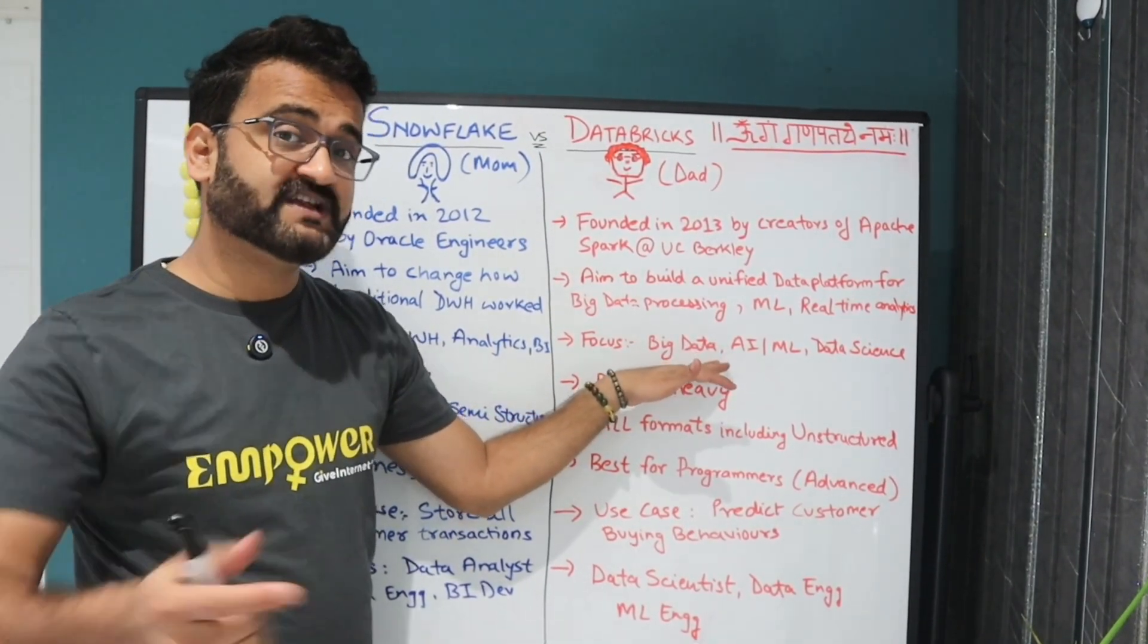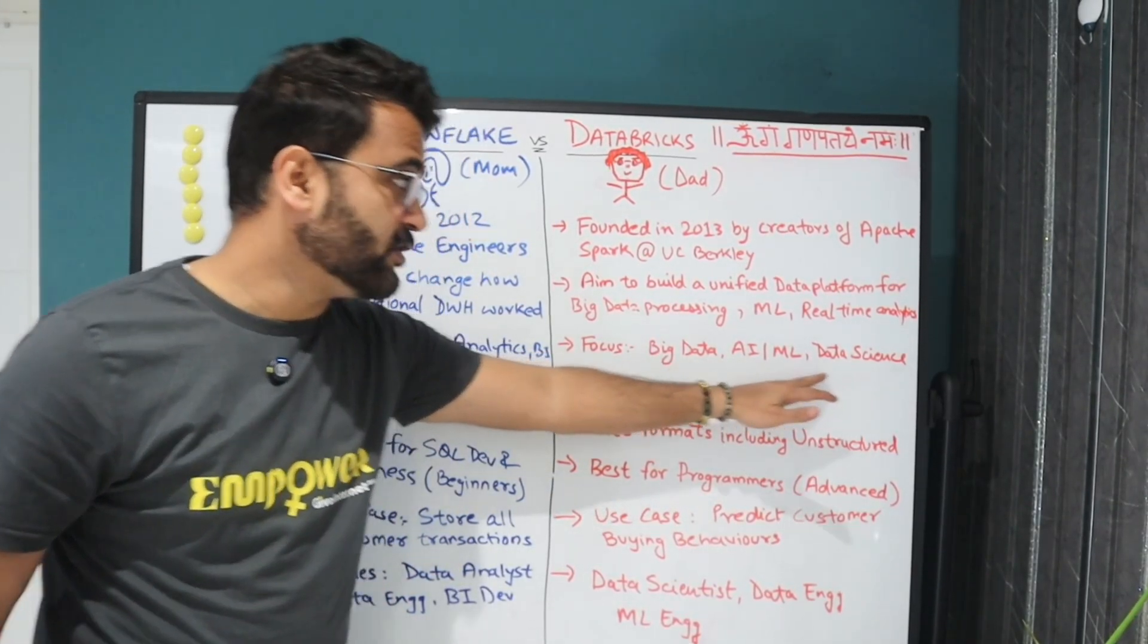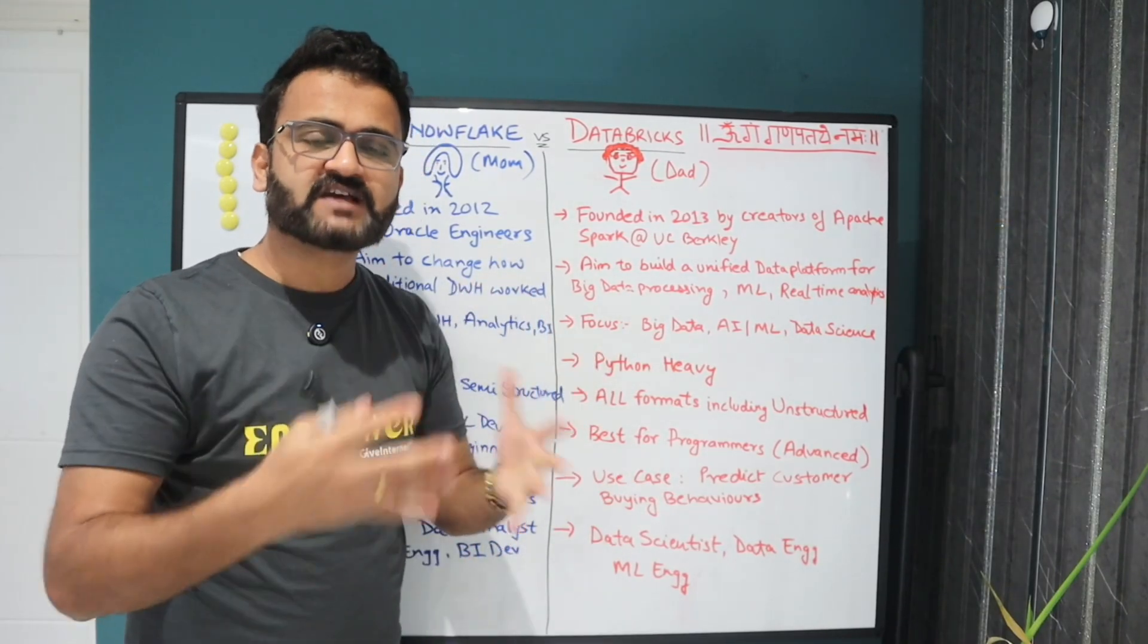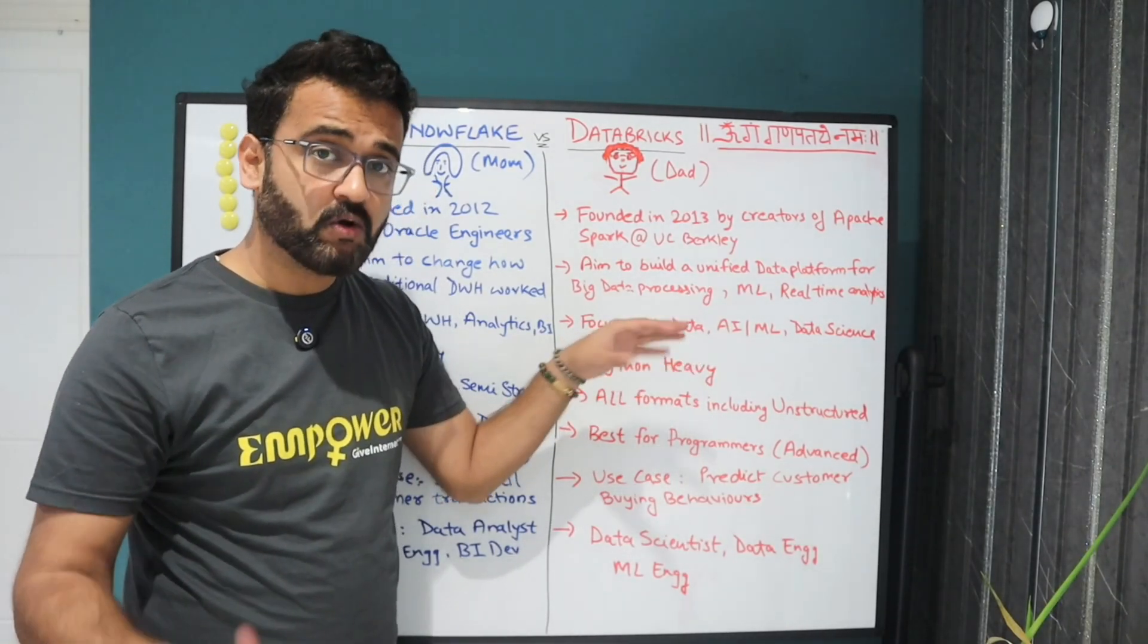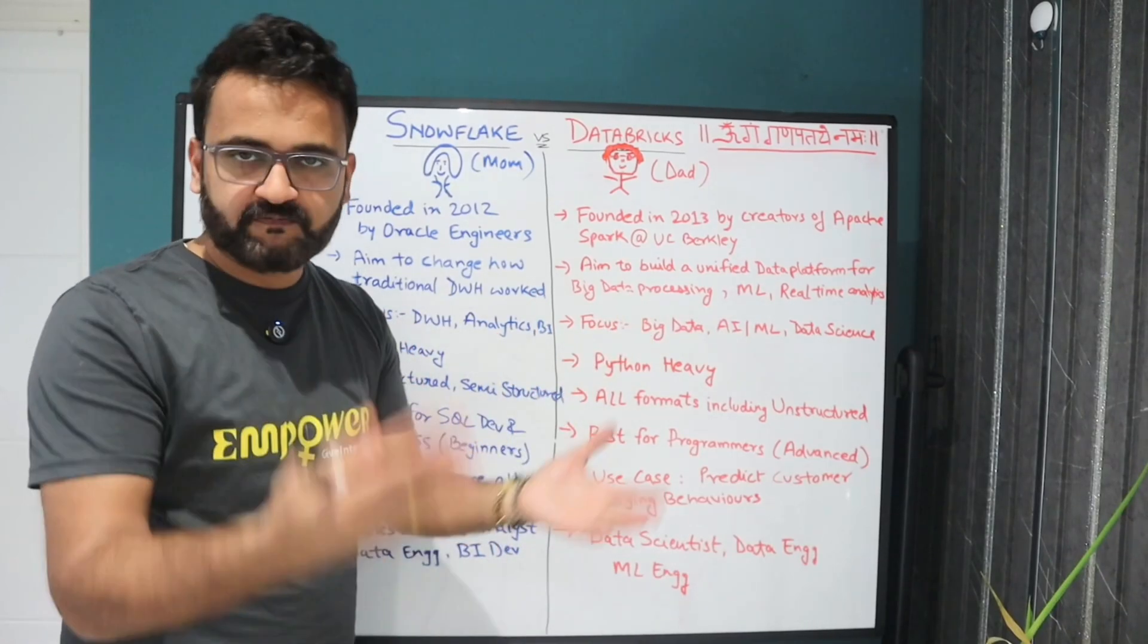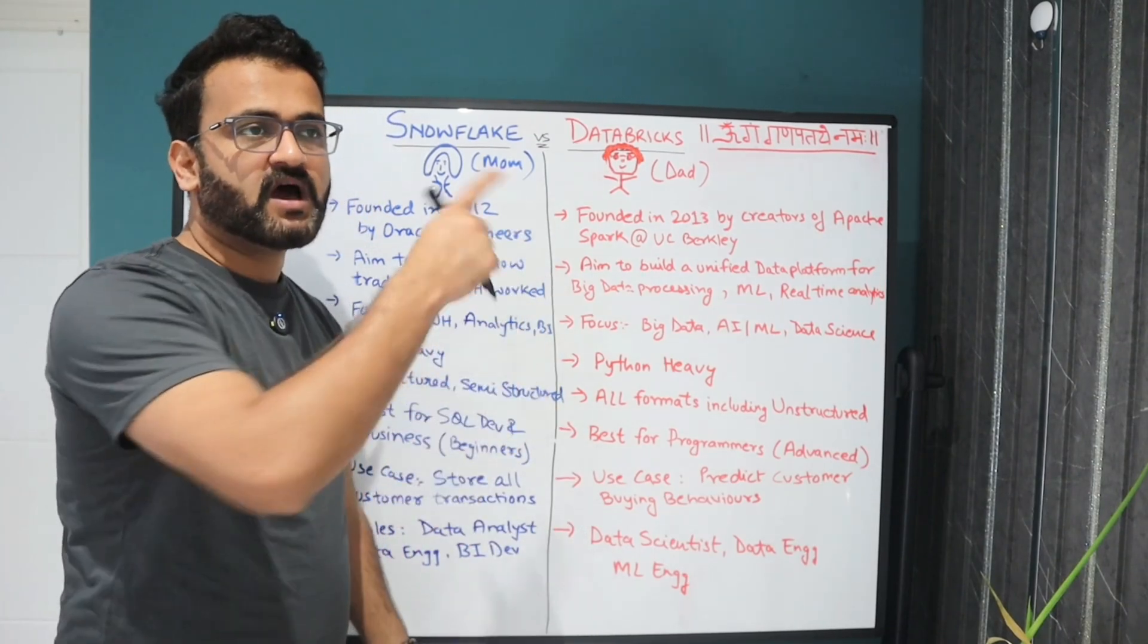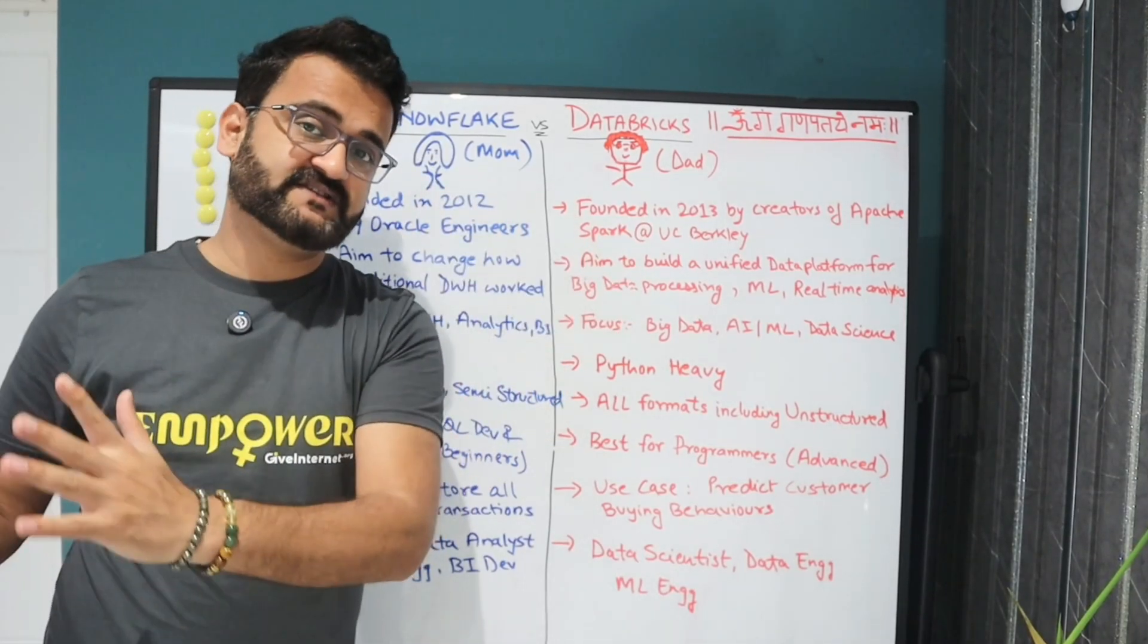Here the focus was big data because it came from Hadoop and MapReduce concept and framework, AIML, data science, all these kind of use cases where you needed the knowledge of Python, where you needed to understand how NumPy works, how Pandas works, all these kind of things where you needed Databricks was a better platform in that sense. Now what has happened over the period of time is both these platforms are kind of providing more and more functionality. So you will see that there would be some overlap. But we are talking about the basic differences here.